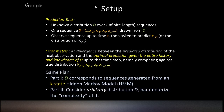The game plan is as follows. In the first part, we consider sequences generated from a hidden Markov model with k states. Then in the second part, we generalize to arbitrary distributions. In order to do this, we'll need to parameterize the complexity of the distribution, which will come into play later.